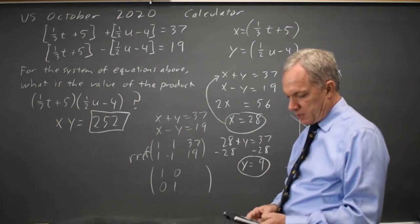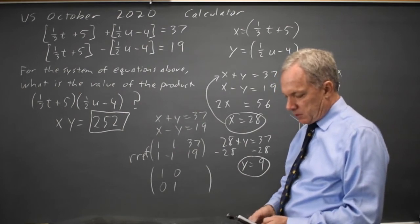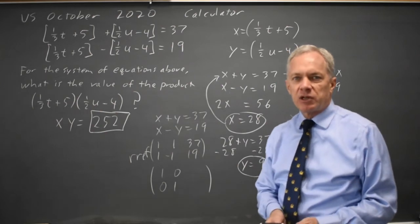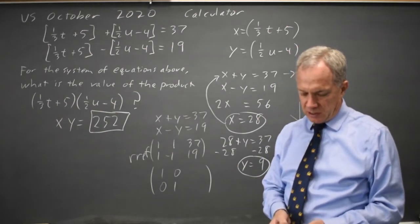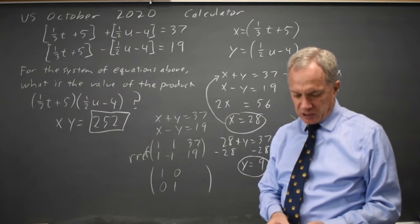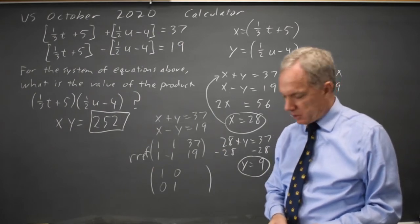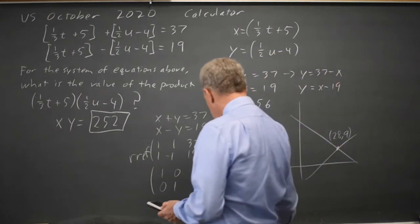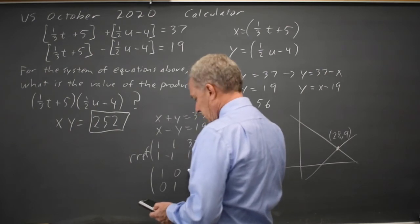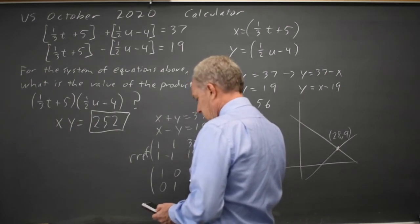Quit out of there. Go back into matrix. Go right to math if you have a calculator that does matrix operations. And reduced row echelon form on the matrix I just created gives me 1, 0, 0, 1, and 28, 9.